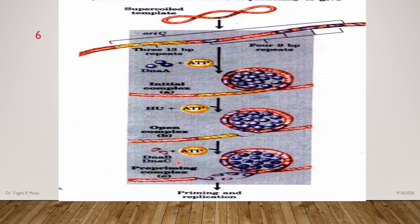Next, the DNA B protein comes into the picture. DNA B protein binds to the single-stranded DNA. This DNA B protein is known as the helicase protein. It recognizes the unwinding site. However, DNA C protein helps the DNA B protein to recognize this unwinding site and bind to the single-stranded DNA. DNA B protein, which is the helicase enzyme, comes in hexamer form and binds there. This is known as pre-priming complex formation.